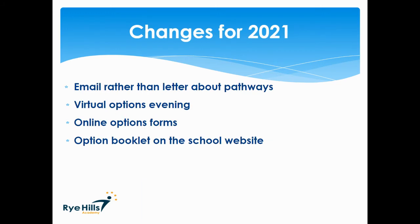2021 has been a year unlike any other — more home learning, virtual parents' evenings, and for Rye Hills, a transition to a new multi-academy trust. All of these things have contributed to a delay in getting started with the option process and changes to the way we have to run it. By now you should have received an email with information about the option process, confirming some decisions made by the Academy about option pathways as well as your science pathway information. If you haven't received that email, please contact the Academy using the contact us email address.